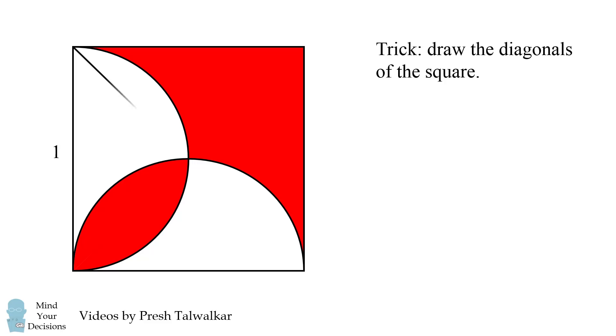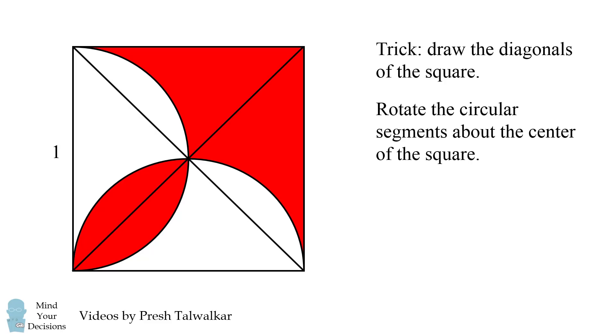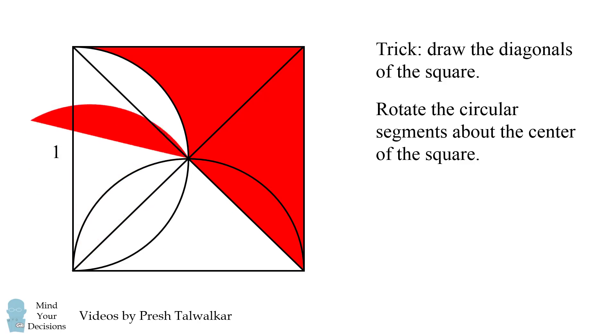Draw the diagonals of the square. Now, rotate the circular segments about the center of the square. We end up with the following diagram.